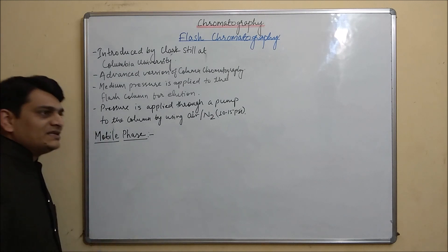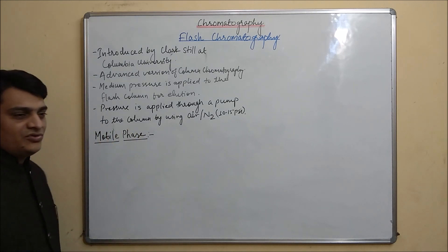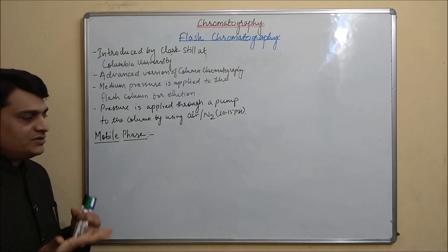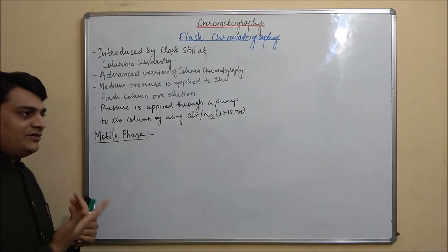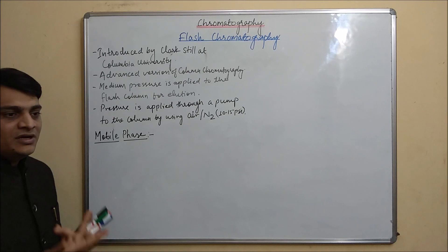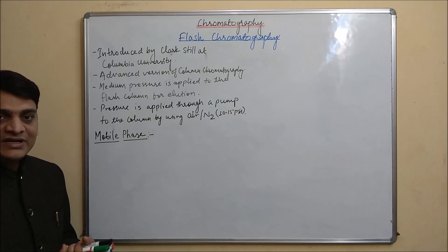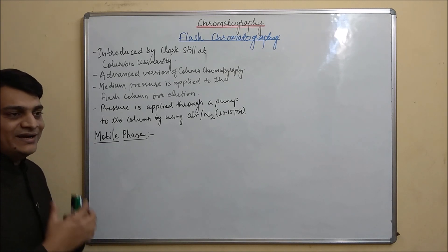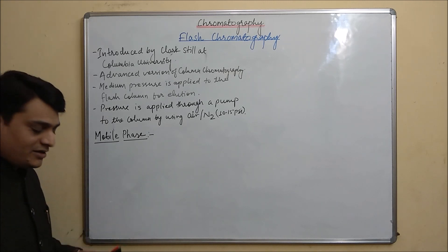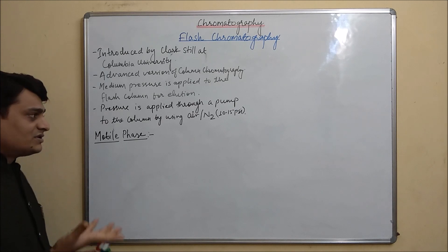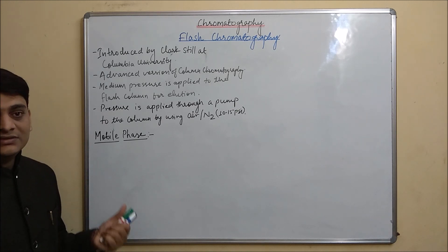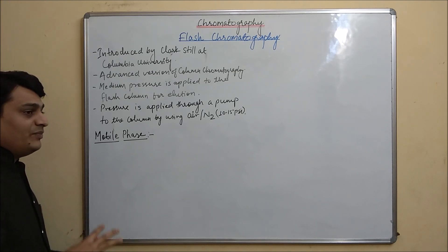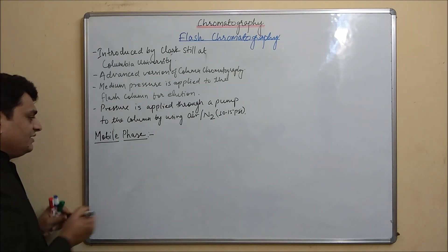For development of the mobile phase in flash chromatography, we have to select a binary mixture — we have to take two solvents, one having low polarity and one having high polarity. The polarity of the compound will then be moderate and the separation will be better. The RF value for the compounds in TLC should be 0.35 or lower than that for better separation in flash chromatography.